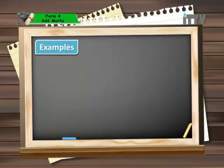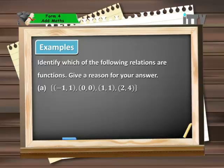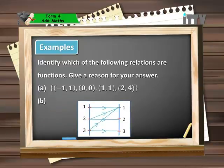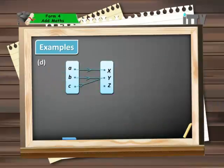Here's an example for us to try. Identify which of the following relations are functions. Give a reason for your answer. In part A we have a set of four ordered pairs which are negative 1 1, 0 0, 1 1, and 2 4. Part B shows us a diagram where we have objects 1, 2 and 3 mapped onto the images of 1, 2 and 3 as shown. Part C shows us a graph where the objects are the values in the x-axis and the images are the values in the y-axis. And finally in part D we have an arrow diagram where objects A, B and C are mapped onto a co-domain which contains elements x, y and z.